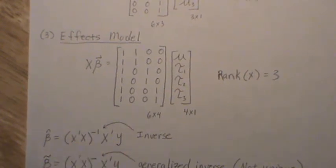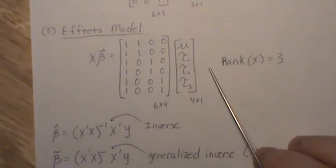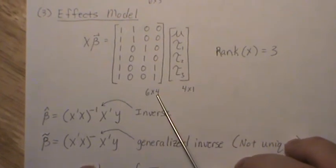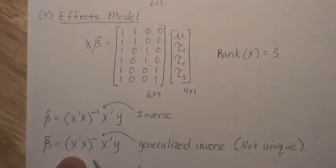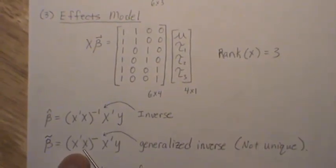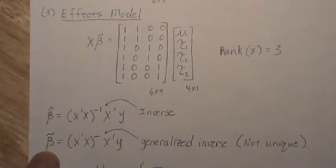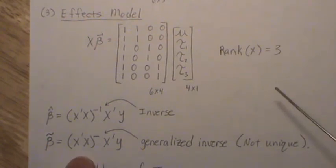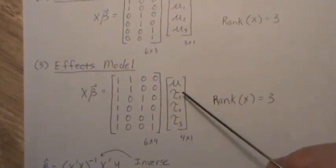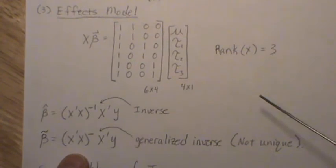But in the effects model, this is a 6 by 4 of rank 3. So this matrix here ends up being a 4 by 4 matrix of rank 3, so it's not invertible. And so we have to use what's called a generalized inverse to come up with an estimate for our beta parameters. And in this case, it's the mu and the taus.